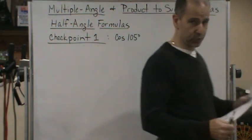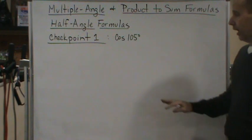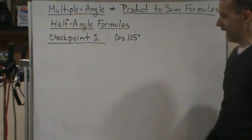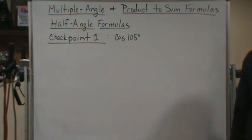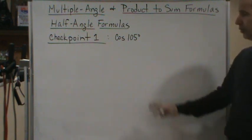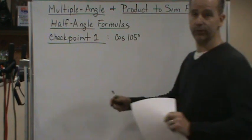Alright, welcome back. We're going to do a checkpoint. I want you to find the exact value of cosine of 105 degrees using half-angle identities or half-angle formulas. I'm going to do the same, then come back and see if you got the same thing I got.